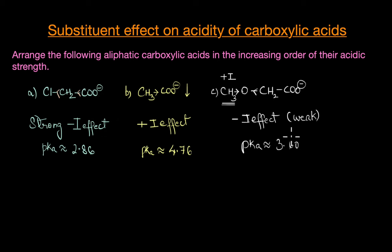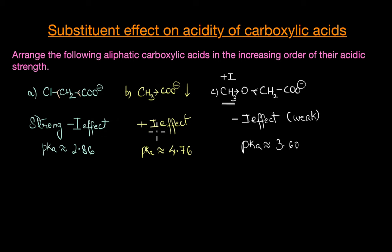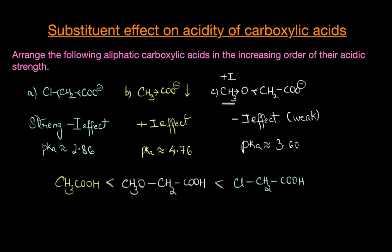From this analysis, chloroacetic acid is the most acidic due to the strong minus I effect of the chlorine atom, followed by methoxyacetic acid which has a weaker minus I effect from the methoxy group. The least acidic is acetic acid because the methyl group exhibits a plus I effect that destabilizes the conjugate base. So the correct increasing order of acidic strength is: acetic acid < methoxyacetic acid < chloroacetic acid.